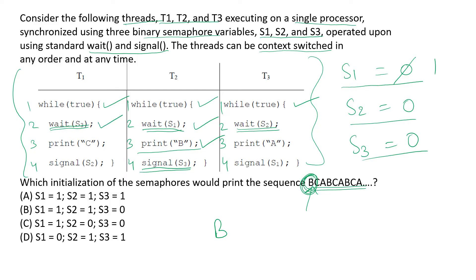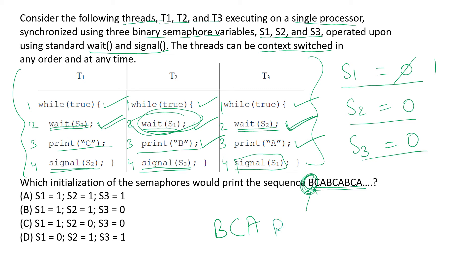Process T1 prints 'C' and raises a signal for S2. This allows process T3 to execute successfully and print 'A', then raise a signal for S1. We then come back to process T2 and the cycle continues, printing 'BCA BCA' in a cyclic manner — which is the required output. Hence the initial values of S1, S2, and S3 are 1, 0, and 0 respectively. The answer is C.